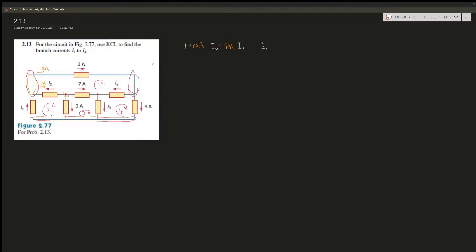Now looking at another node: 2A is entering and i4 is exiting. Using the sign convention from the book — leaving is negative — we write: negative i4 minus 2A equals 0, therefore i4 equals negative 2A.